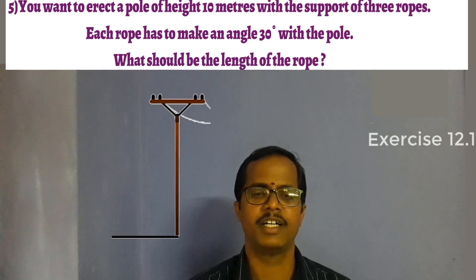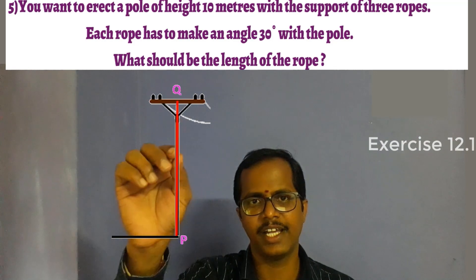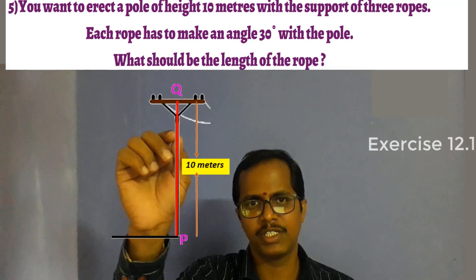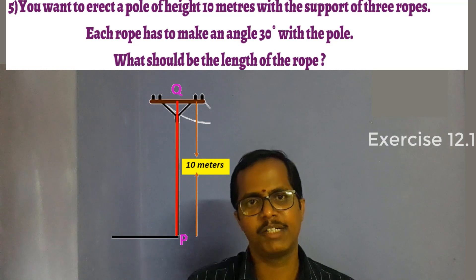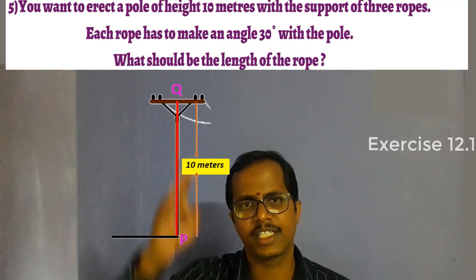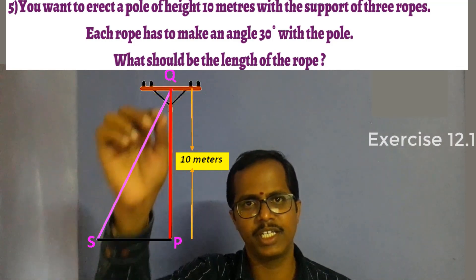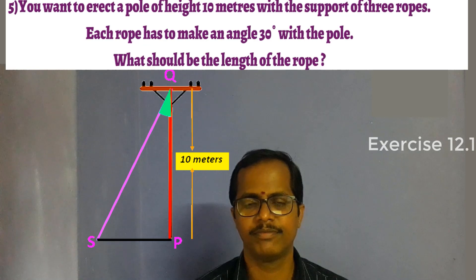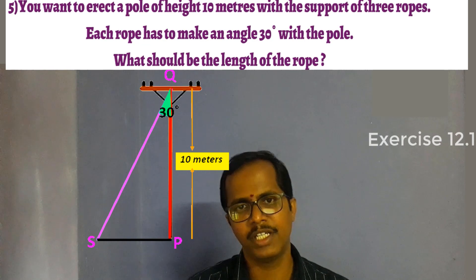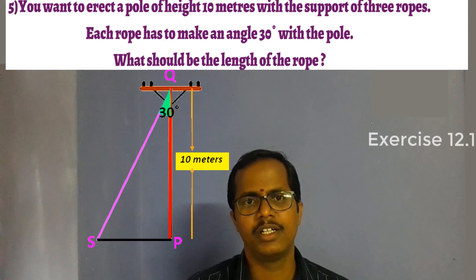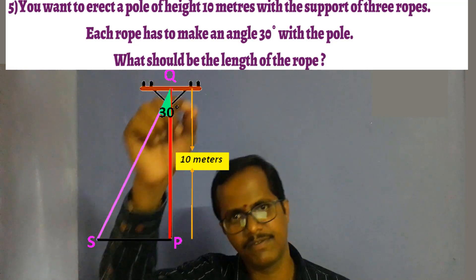Imagine a pole on the ground — represent its height with a line PQ, and its height is given as 10 meters. This pole is erected by three ropes, so let us consider a rope QS. This rope is making a 30-degree angle with the pole, and the remaining two ropes are also making the same angle, meaning all three ropes are equal in length. It is enough to find the length of the single rope QS.